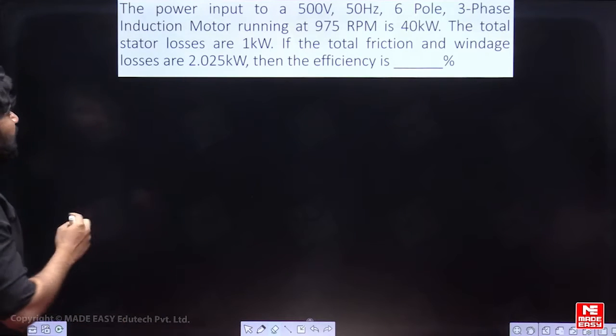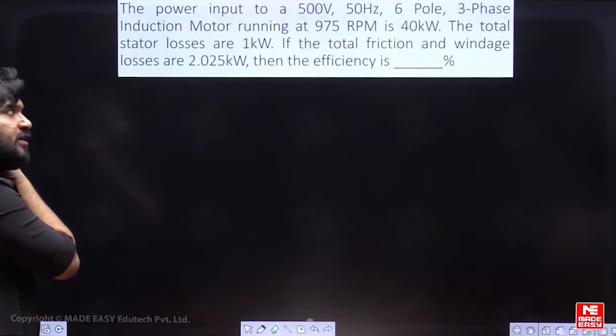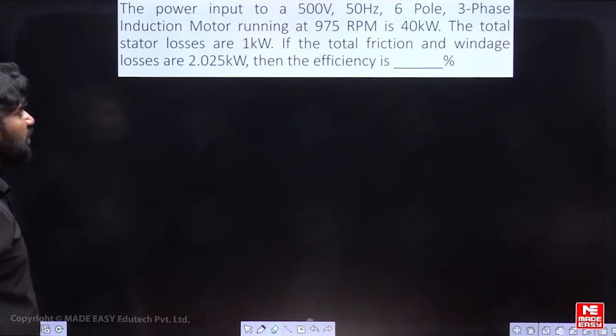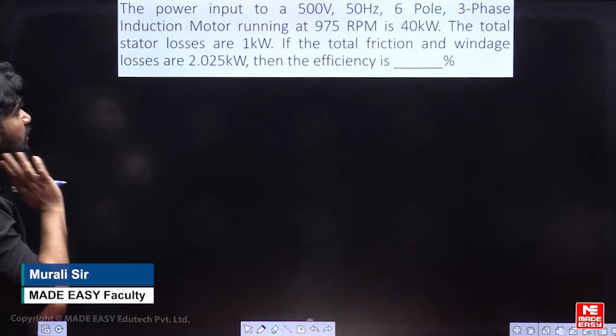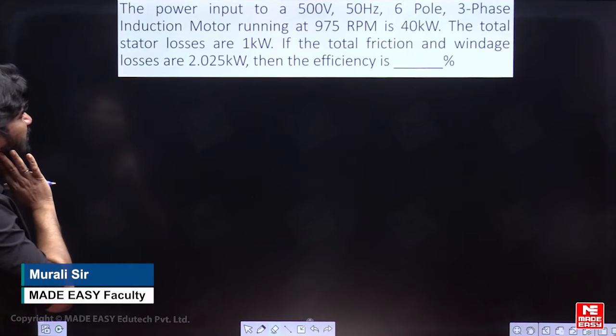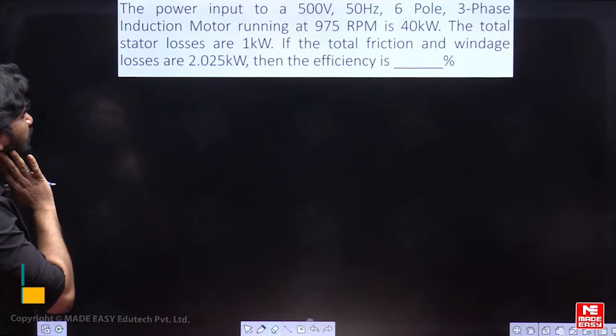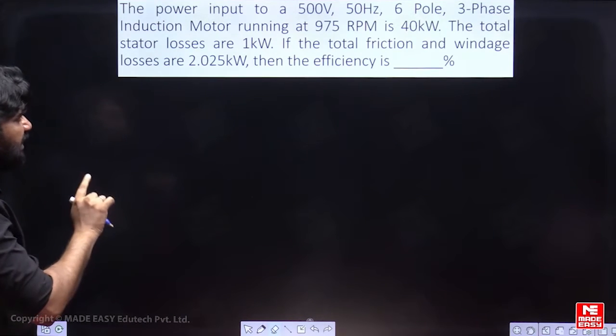I am reading it out. The power input to a 500 volt 50 hertz 6 pole 3 phase induction motor running at 975 rpm is 40 kilowatt. The total stator losses are 1 kilowatt. If the total friction and windage losses are 2.025 kilowatt, then efficiency is.